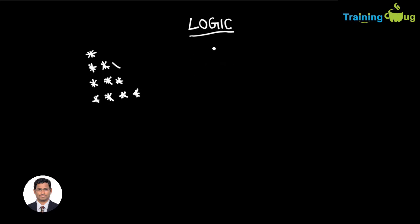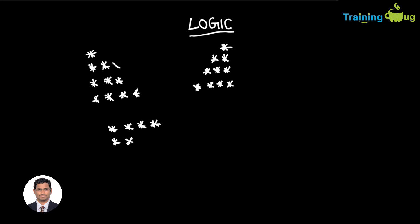Or they may ask you to print it in another shape — one star in the first line, two stars, three stars, four stars — which is exactly the mirror image. Or they may ask you to print it in reverse format: five stars in the first line, then four, three, two, one.